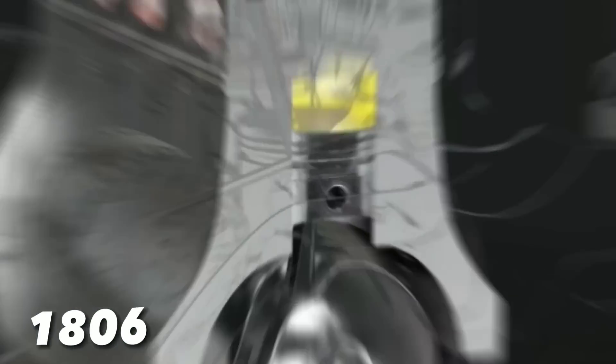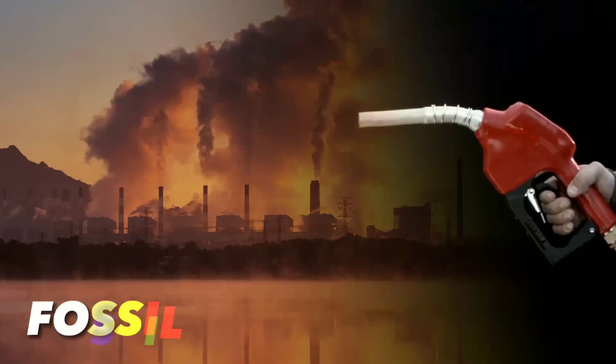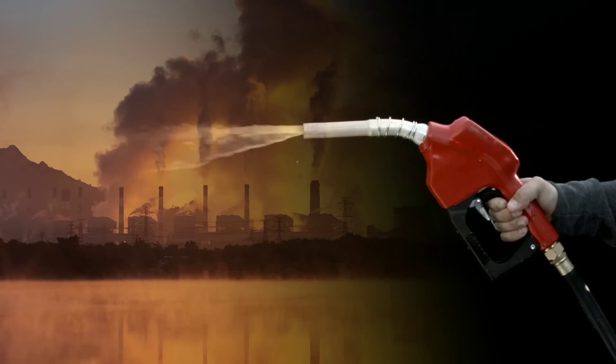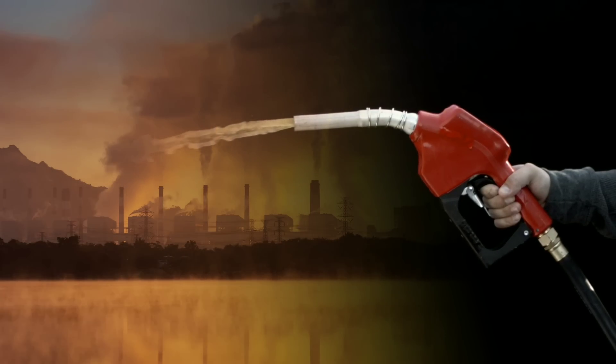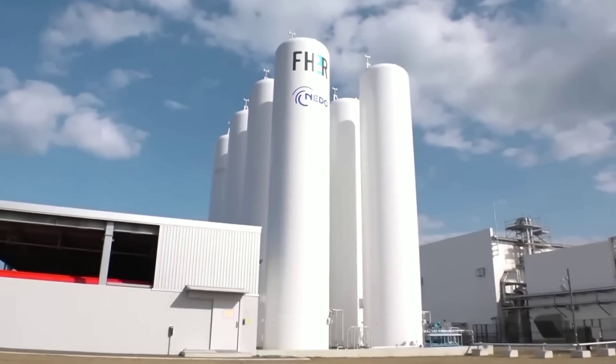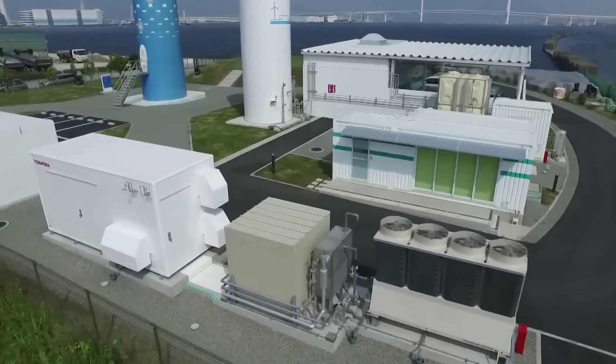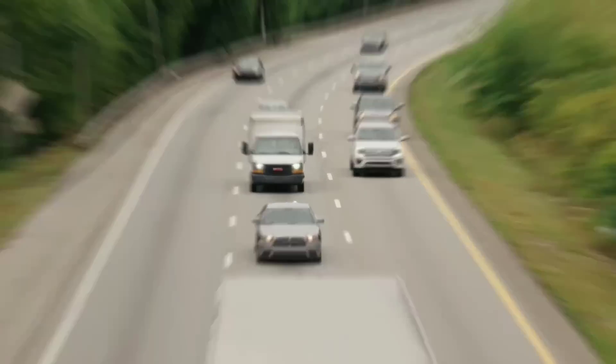But hydrogen has a problem—it's mostly made from fossil fuels, which emit a lot of carbon dioxide. Every year the hydrogen industry produces as much CO2 as the UK and Indonesia combined. That's why green hydrogen, which is made from renewable sources, is so appealing. It can reduce pollution and power heavy-duty vehicles that batteries can't handle.